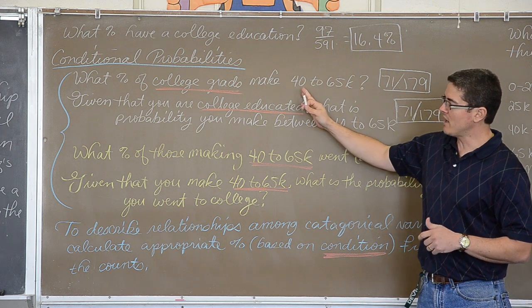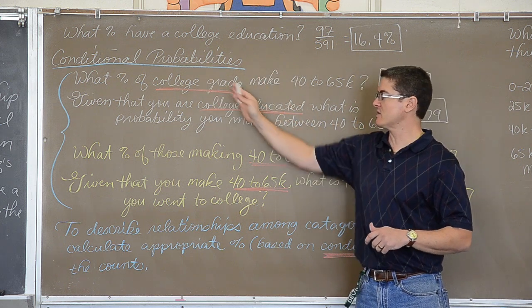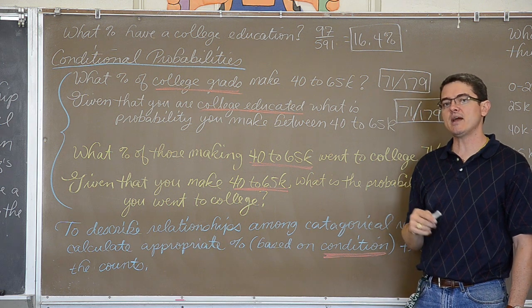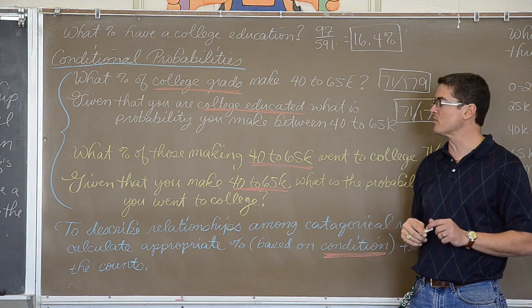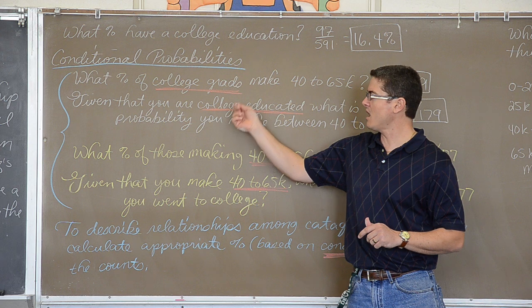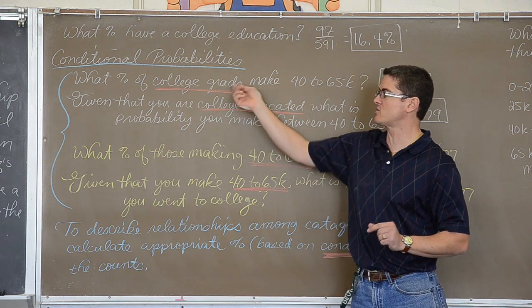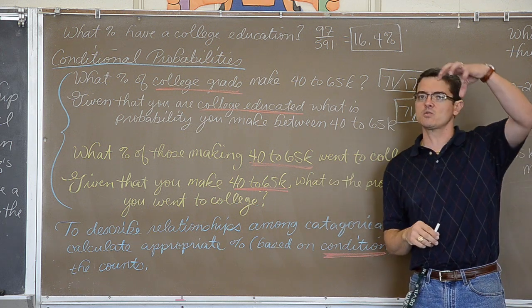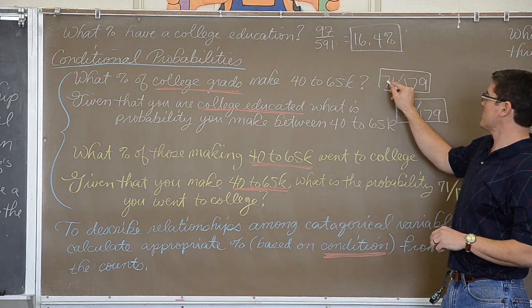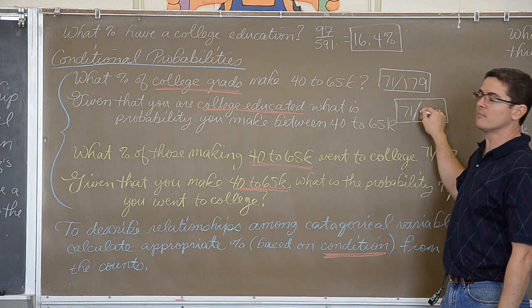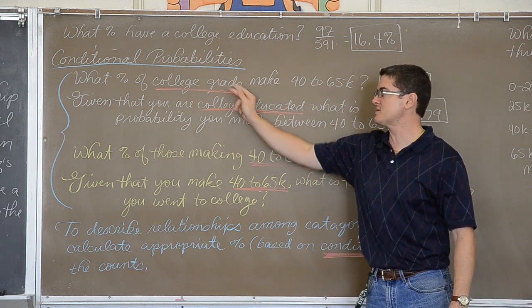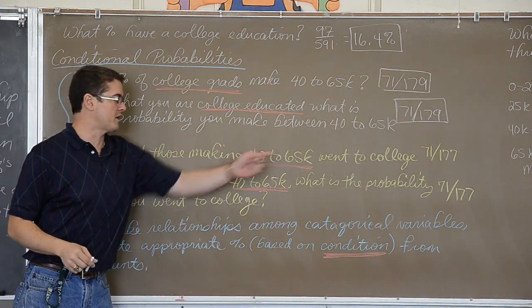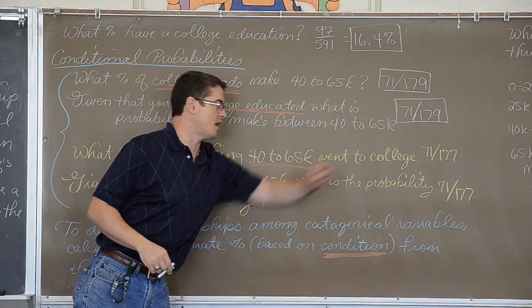So you need to read these questions, you need to identify occasionally, especially when they are talking about two variables in the same question, they are probably giving you a condition and that is going to dictate whether you do a row or column percent. The college grad, given that you are a college grad, what percent of college grads... Well if you go back and you look at the previous part of the video, the college was on the top of the column. So again, this 71 divided by 179, these are column percents because this variable is the top of the column.